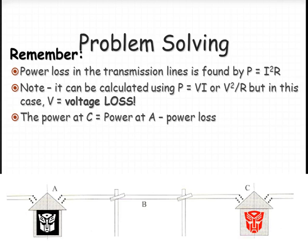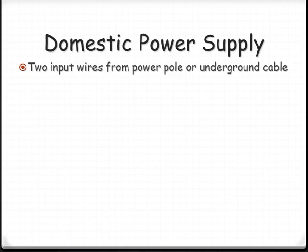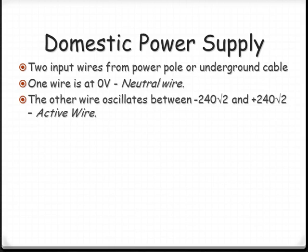Okay, so just to relate it to what we have at home, basically, domestic power supply generally comes on a power pole over the top to the house or via underground cables. You have one wire, which is the neutral wire, so that's set at zero volts, and the other wire is your active wire. That's the one that's oscillating with the AC current.